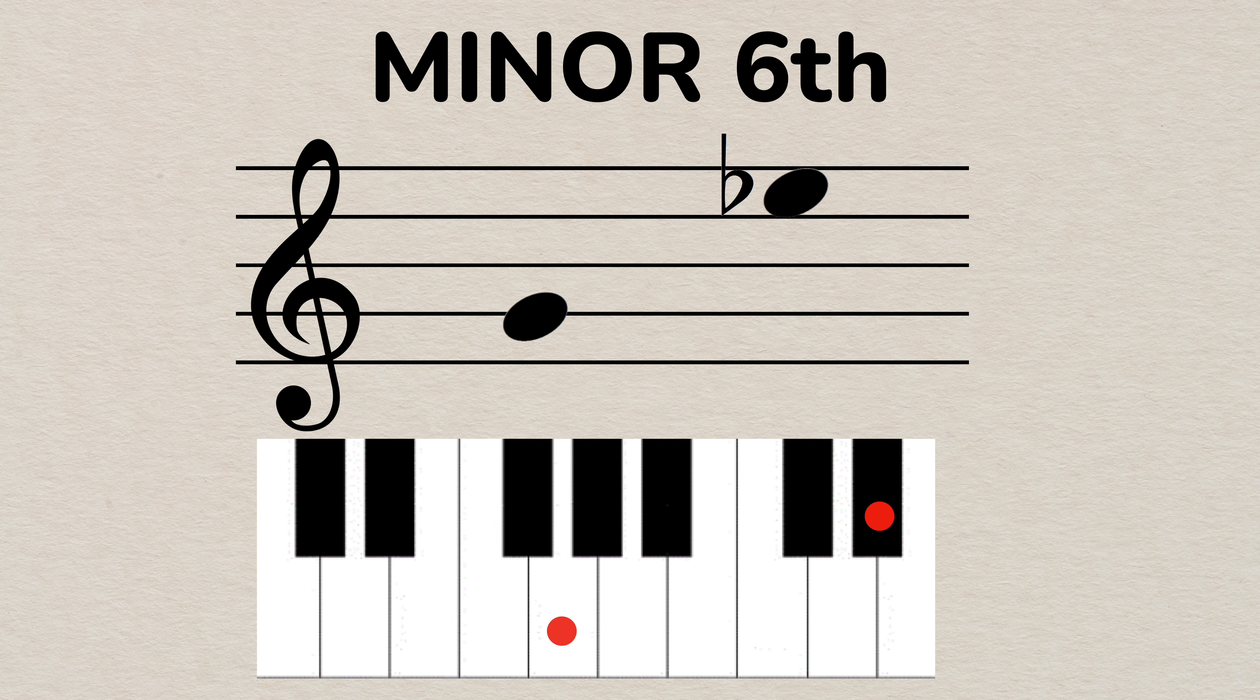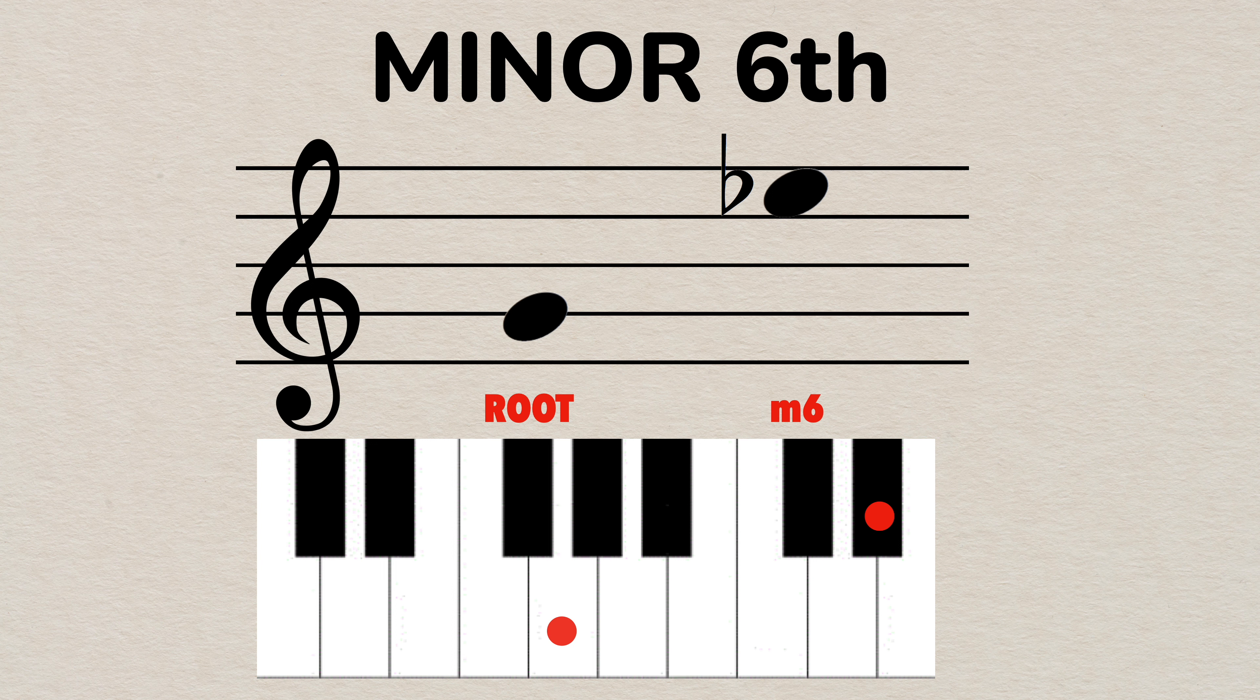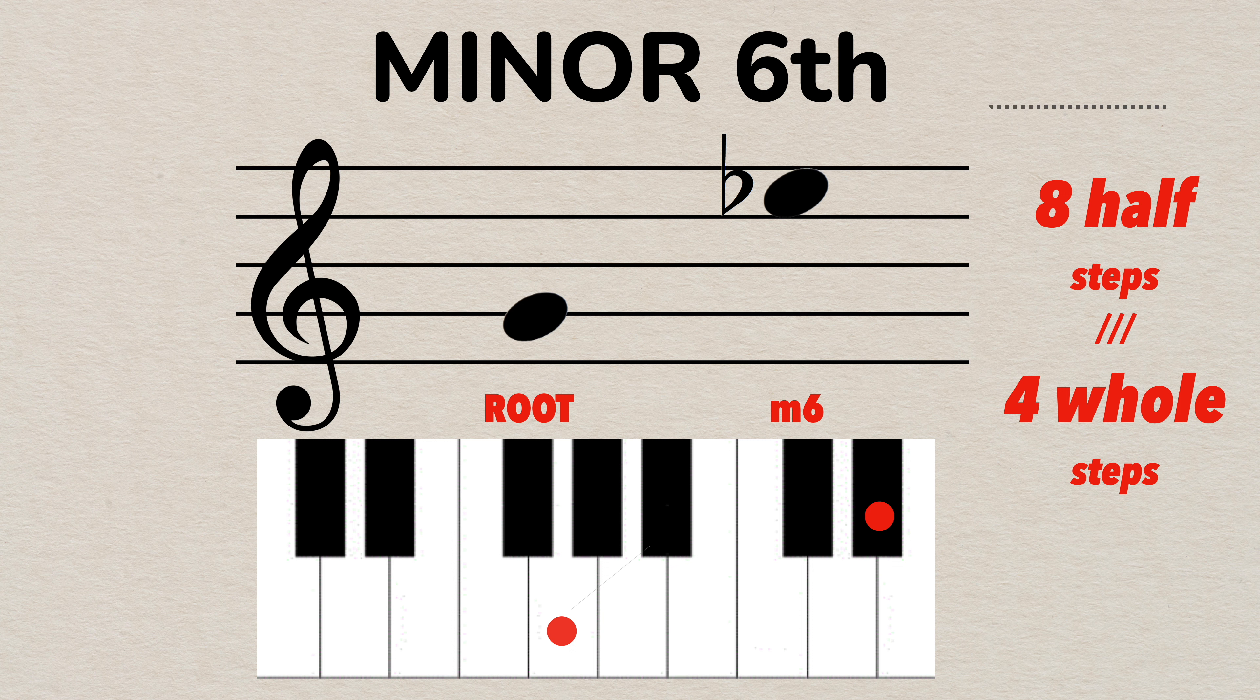Another example of a minor interval is a minor sixth. If the root note is G, the minor sixth interval note above would be E flat which is exactly eight half steps above G. Any interval that is six scale degrees apart and has this distance is called minor sixth, and here's what it sounds like.